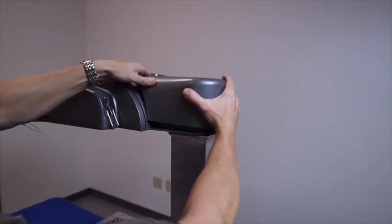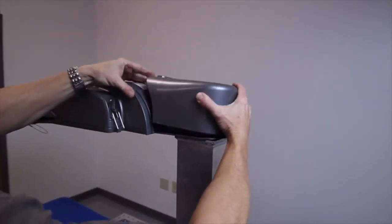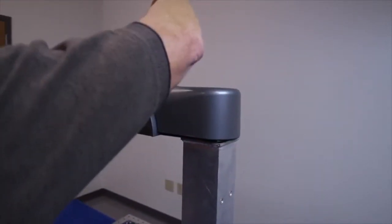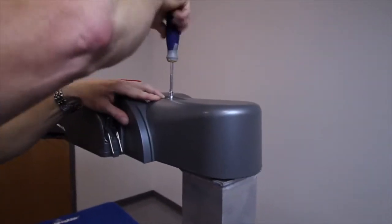After the luminaire has been wired to the terminal block, secure the tenon cover back onto the luminaire. Lastly, install the photocell.